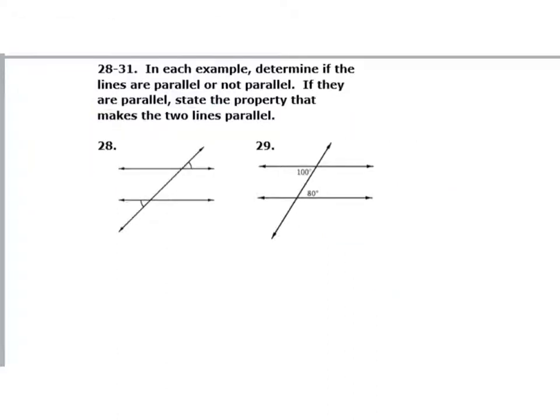Number 28: in each example, determine if the lines are parallel or not parallel. If they are parallel, state the property that makes them parallel. Looking at number 28, I can see there's a congruent angle here and a congruent angle here, and those are on alternate sides of my transversal.